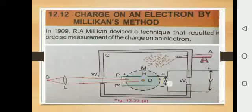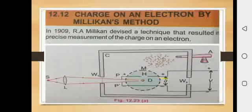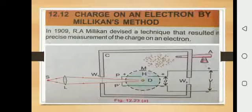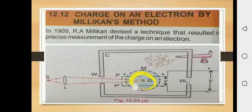The distance between the two plates is represented by small d. There are two windows in this chamber: W1 and W2. The two horizontal plates are P-plus and P-minus. There is a small hole represented by capital H so that the oil droplets enter between the plates through this hole. When the atomizer is pumped, oil droplets enter the chamber, move downward due to gravitational force, and a few pass through the hole into the region between the horizontal plates.